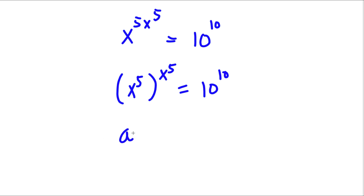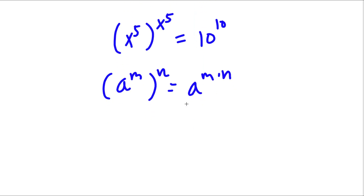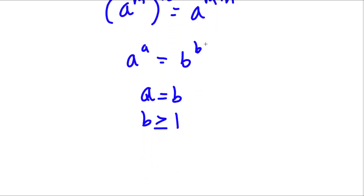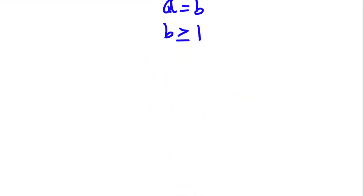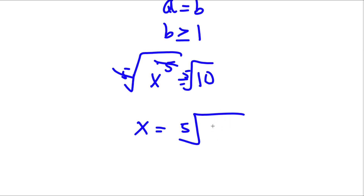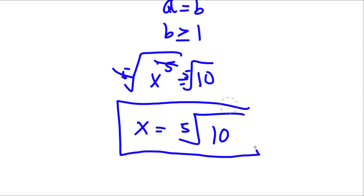And I did this because if I have something in the form a to the power of m to the power of n, this is equal to a to the power of m times n. So now, if I have something in the form a to the power of a is equal to b to the power of b, then a is equal to b as long as b is greater than or equal to 1. In this case, b is 10, which is greater than or equal to 1. So now I have x to the power of 5 is equal to 10. Now to get rid of this power of 5, I'm going to take the root of 5 on both sides. These two cancel out and I'll be left with x is equal to the fifth root of 10. So this is our answer.